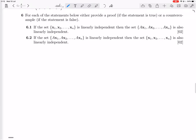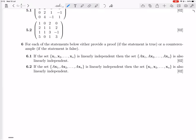And they just asked us to provide a counter-example, right? If it was false, yes. If the set ax1 to axn is linearly independent, then the set x1 to xn is also linearly independent.